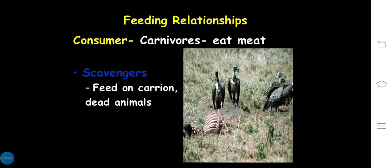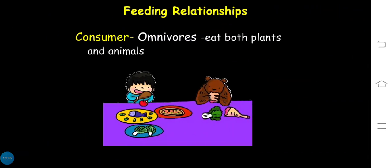Scavengers eat meat and feed on carrion and dead animals — they are a type of natural consumer. Omnivores eat both plants and animals, combining herbivorous and carnivorous feeding behaviors.